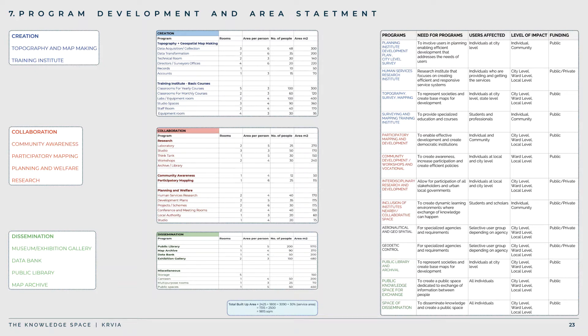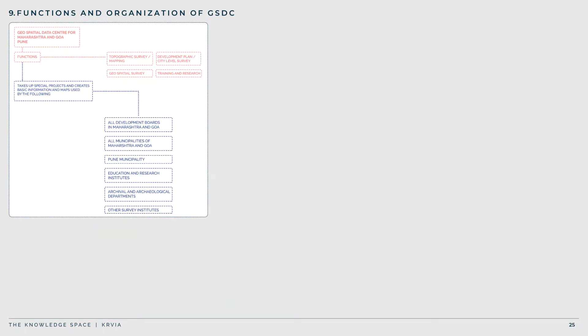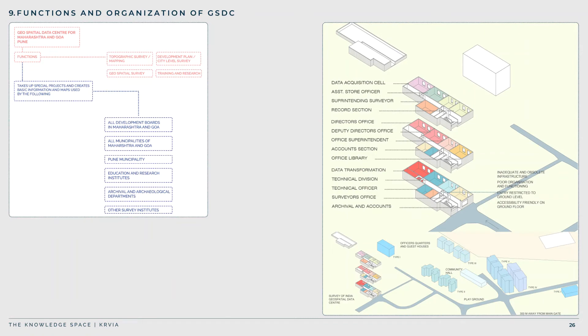The data bank, public library, and map archive complete the imagined institute. The Geospatial Data Center for Maharashtra and Goa is located in Pune, under the central zone, and is responsible for production of maps, topography, and base maps for major cities of both states. It is located in Yerawada, Pune, 300 meters from the main road. The site has notable institutions nearby including the map sales office, Geological Survey of India, Deccan College, Maratha Museum, and several schools and universities. The GSTC undertakes large-scale projects for Mumbai BMC and Pune PMC.